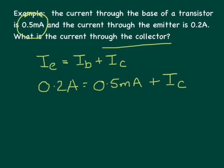So rearranging the equation, my current in the collector part of the circuit is equal to 0.2 amps minus 0.5 milliamps. So for the final part of the calculation, I need both of these currents in the same form.